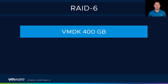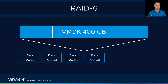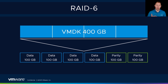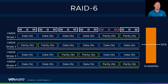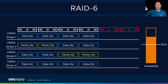From a storage perspective, let's say we've got a 400-gig VMDK. We take that 400-gig VMDK, chunk it into four pieces, and start spreading it across all of our hosts. With our parity, we're taking 100 gigs for parity one and 100 gigs for parity two, for a total of 600 gigs. That allows us to tolerate two failures, because we can lose component one and component two and still be above that 50% watermark.